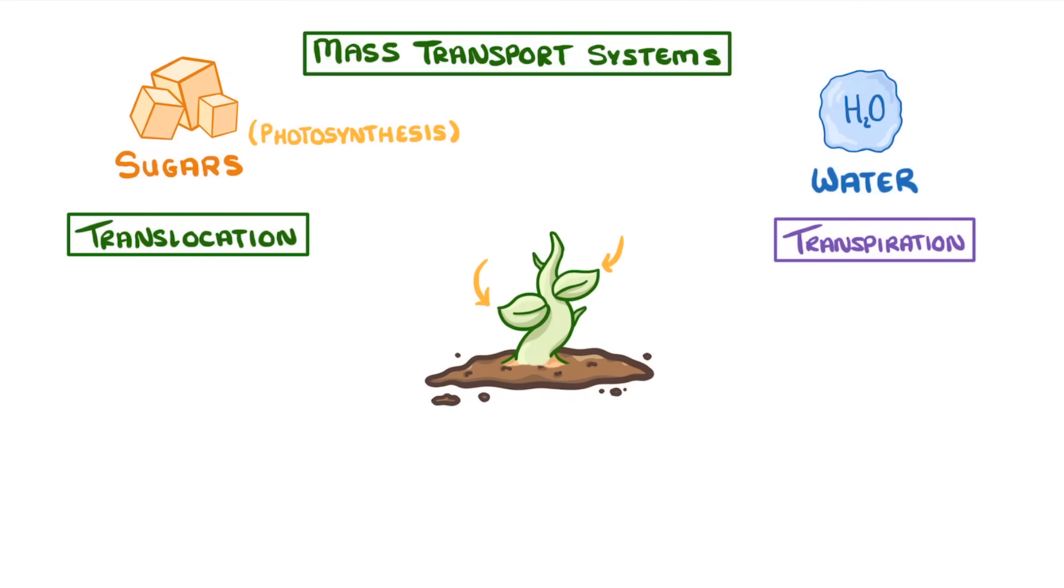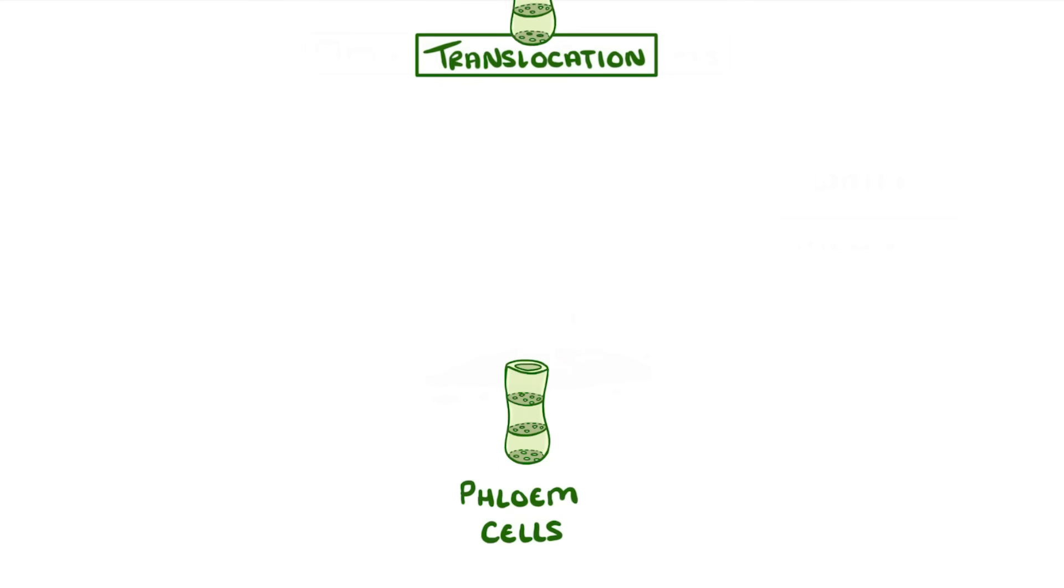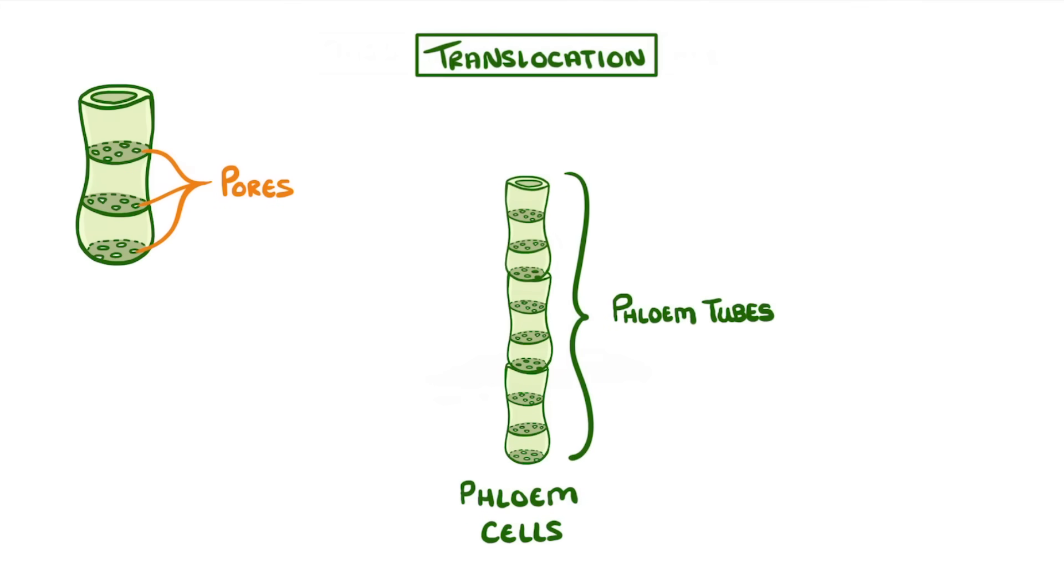This process is known as translocation and it's mainly achieved by phloem cells, which are arranged end to end to form long columns that we call phloem tubes. If you look closely you can see that in between the adjacent cells there are lots of small pores or gaps.